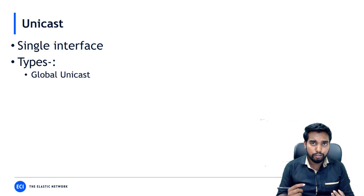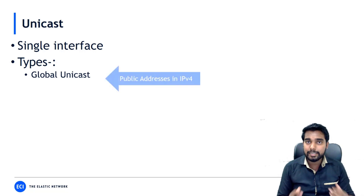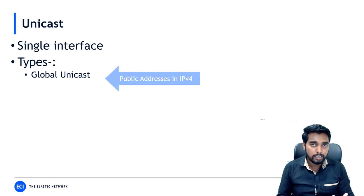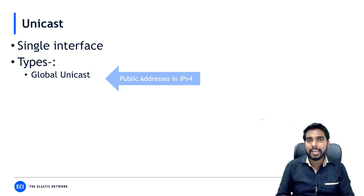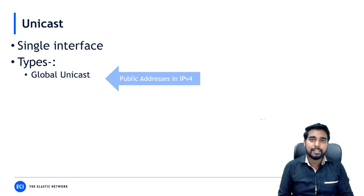These are similar to public addresses in IPv4 — addresses which can be routed globally on the internet. In the same way, global unicast addresses are IPv6 addresses that can be announced globally. These addresses are purchased from IANA at some cost and used for connecting to the internet.